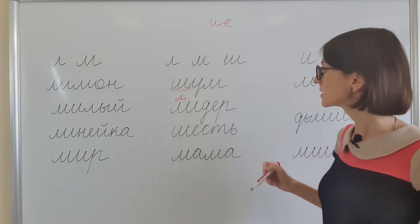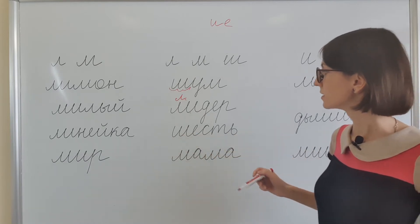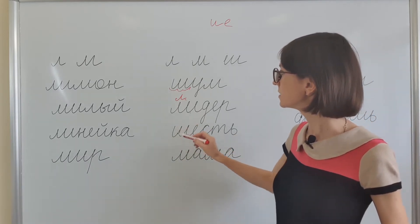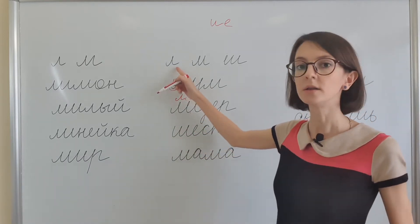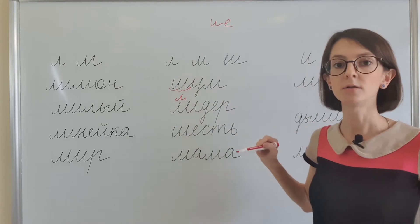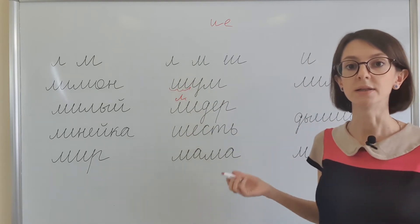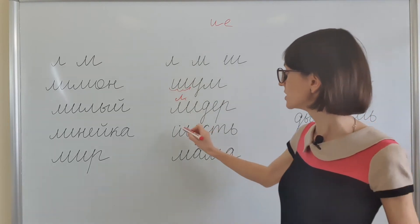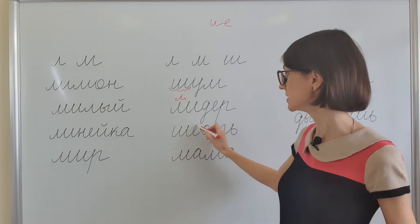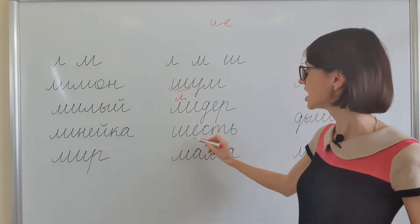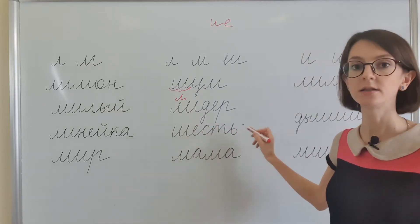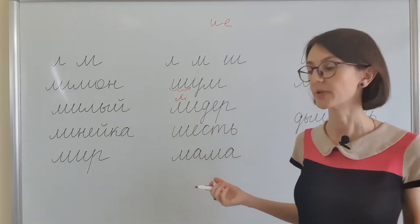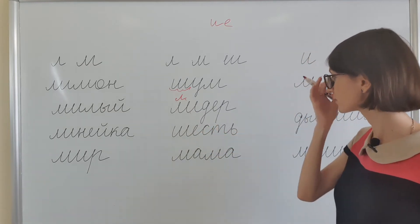Next word. Again it starts over here, so it's not Л and not М — it is Ш. This is Ш, this is Е — ШЕСТЕ. ШЕСТЕ, number six.